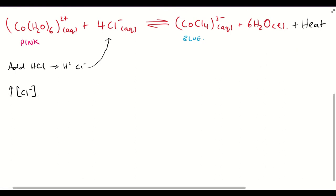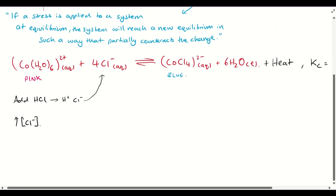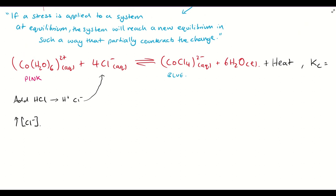So we increase the concentration of chloride ions. What will Le Chatelier's principle predict? Le Chatelier's principle says that if a stress is applied to a system at equilibrium, the system will reach a new equilibrium that partially counteracts the change. Here we have increased the amount of chloride ions, so we can partially counteract this change by using these chloride ions up — favouring the forward reaction. Let's use our collision theory to check that Le Chatelier's principle is in fact correct.